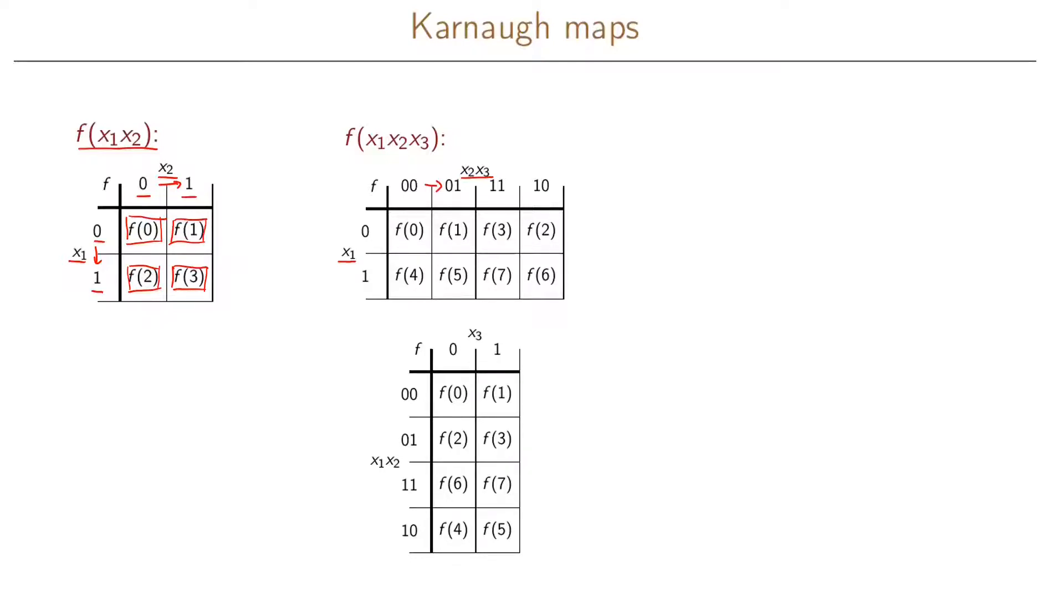So note here now that when we enumerate our different entries in our Karnaugh map, when we go from one column to the next, we're only changing one variable. So here, instead of having the NBCD coding, where we would have 00 01 10 11, we instead have 00 01 11 and 10.